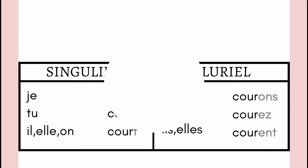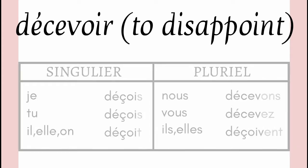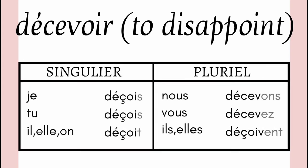The next verb we are going to cover is DÉCEVOIR. DÉCEVOIR means to disappoint. So how we conjugate this verb is as follows: je déçois, tu déçois, il déçoit, elle déçoit, nous décevons, vous décevez, ils déçoivent, elles déçoivent.